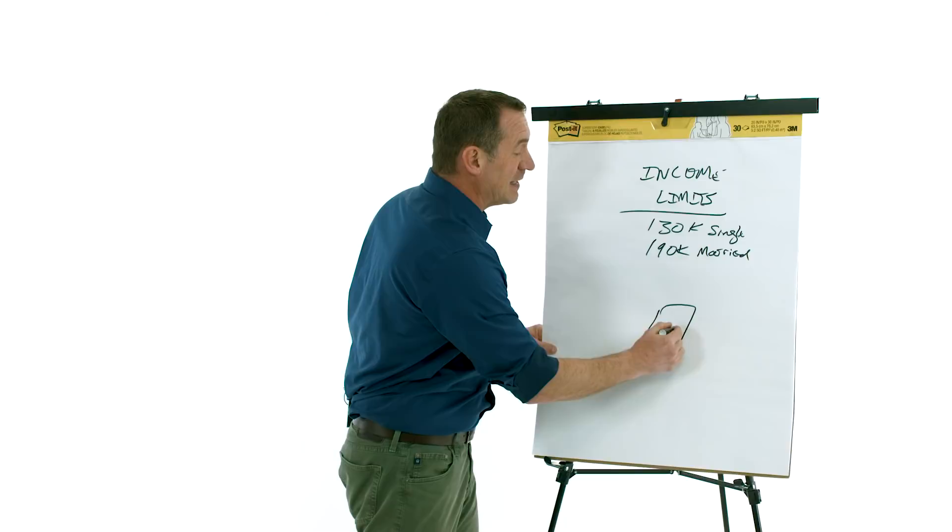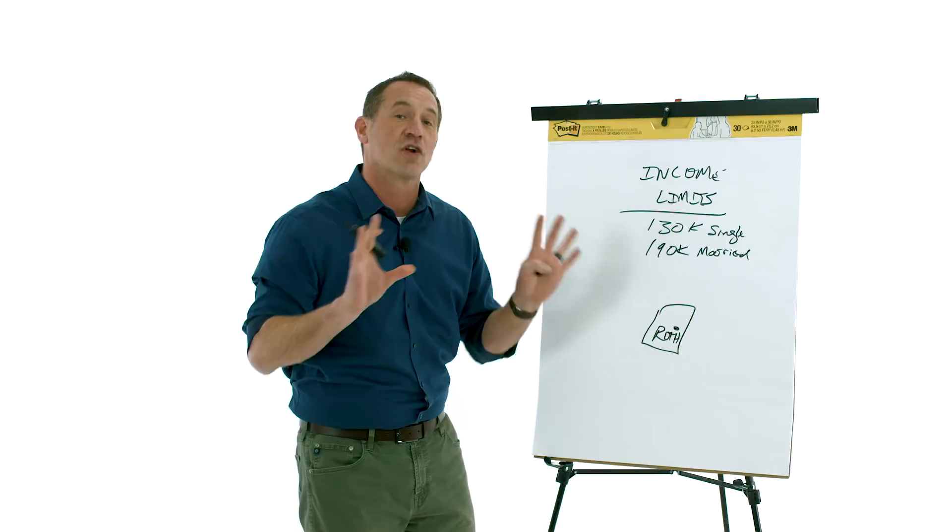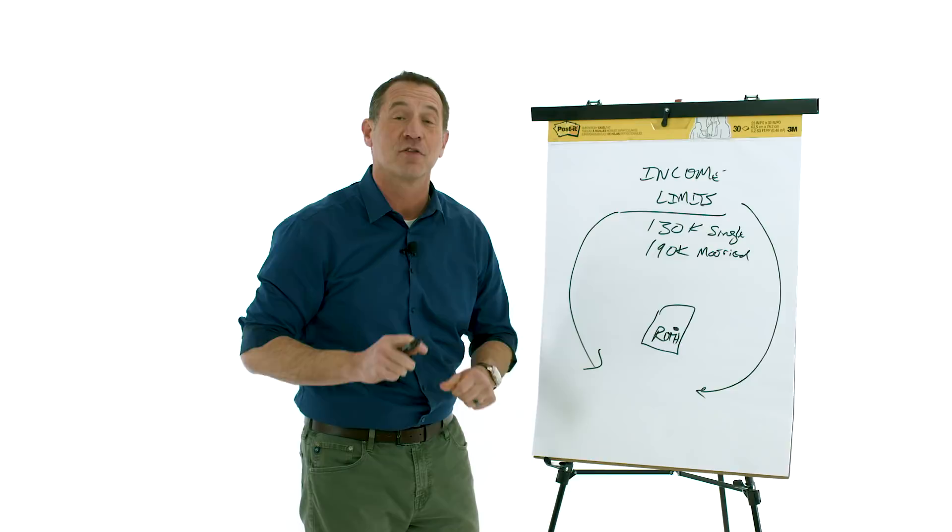Well, if you try to come in through the front door, we can't get there because we want to get into the Roth, but we're blocked. This front door is closed. So I want to talk about two ways to come in the back door and get into the Roth party.